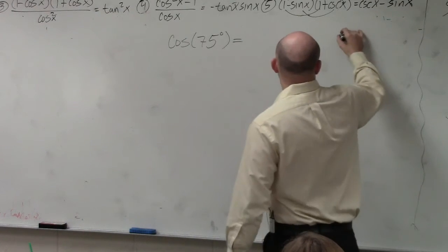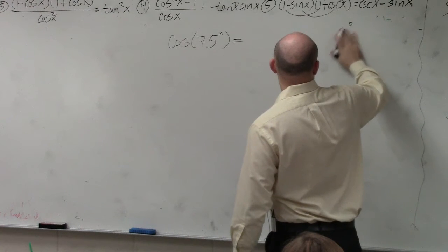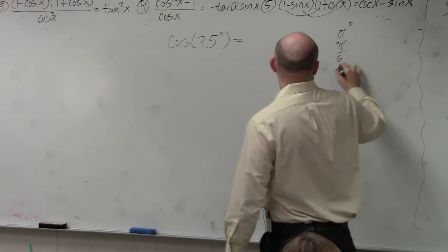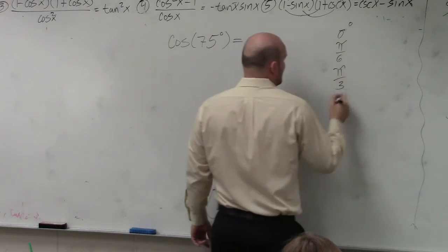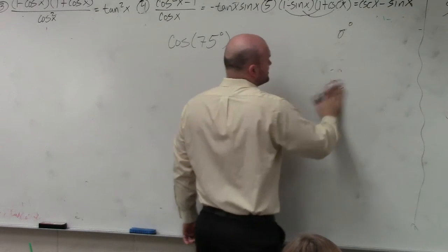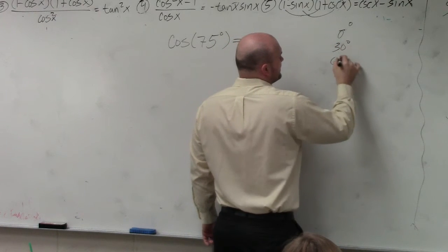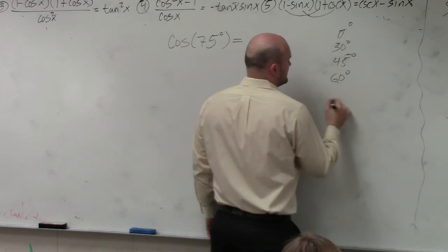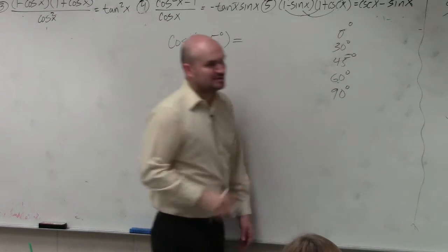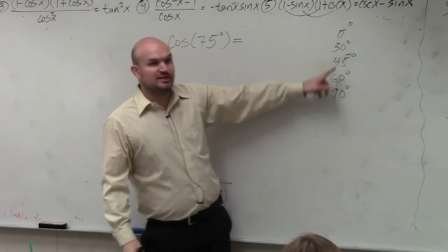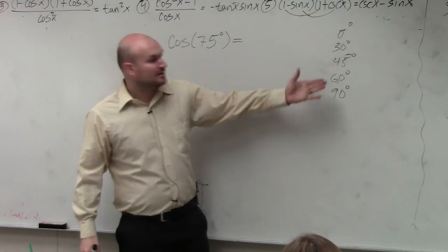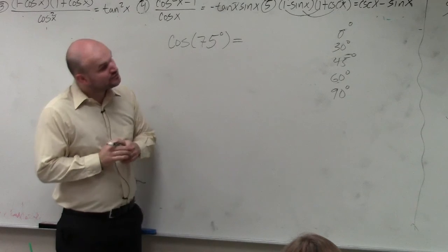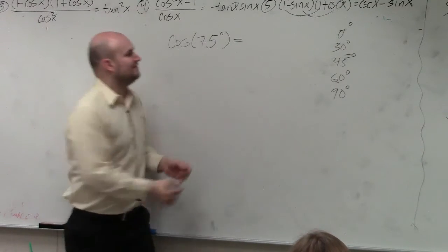Well, guys, there's a lot of angles here. We're doing degrees, right? So we have 30 degrees, 45 degrees, 60 degrees, and 90 degrees. That's all the angles in the first quadrant, correct? Can we rewrite 75 degrees as a sum or difference of two of those angles? 30 and 45. 30 and 45.